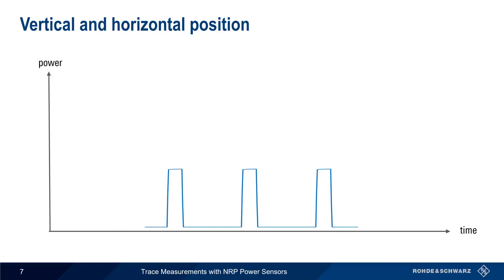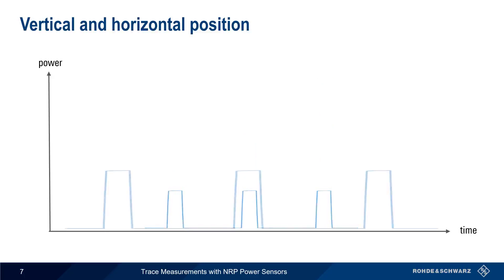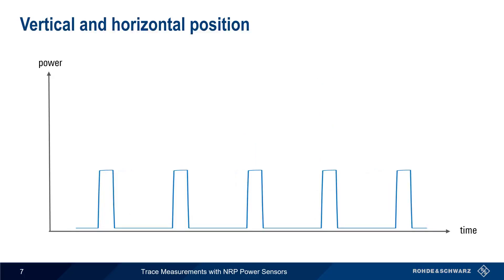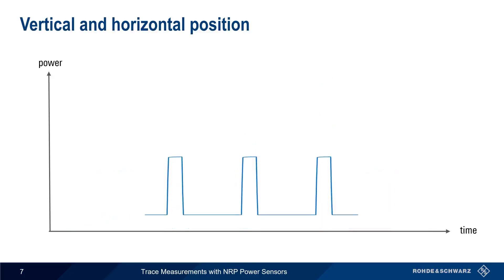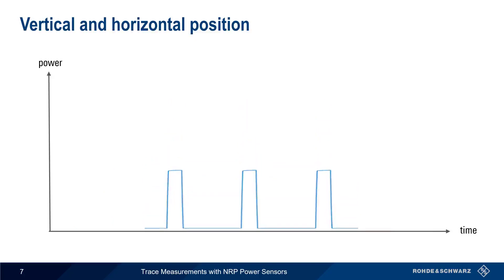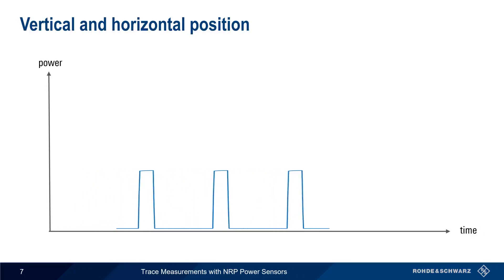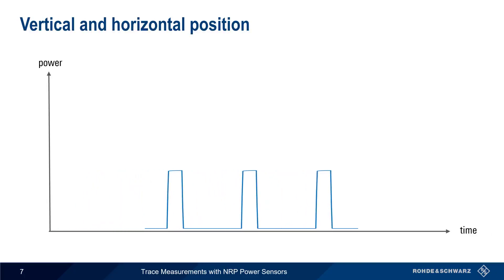In many cases, we may want to change the scale of the vertical or power axis, or the horizontal or time axis. We may also want to change the up-down and left-right position of the displayed trace. These are done in Power Viewer using the vertical and horizontal position parameters.